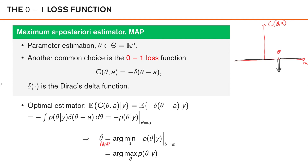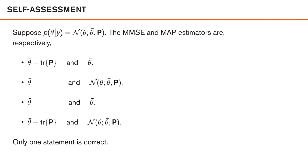We have now derived the two most famous Bayesian estimators: the MMSE estimator and the MAP estimator. Here is a self-assessment question on this topic.